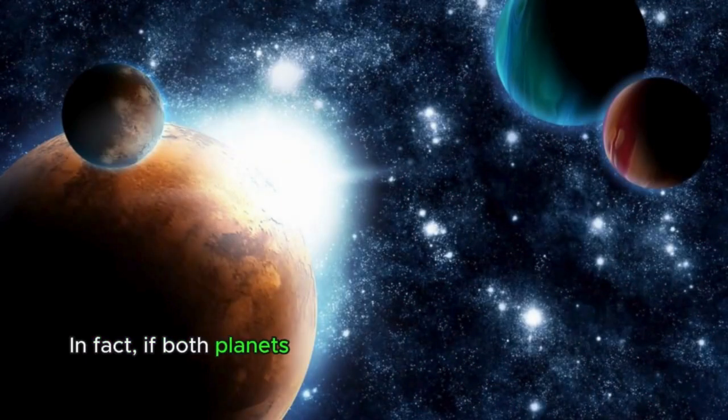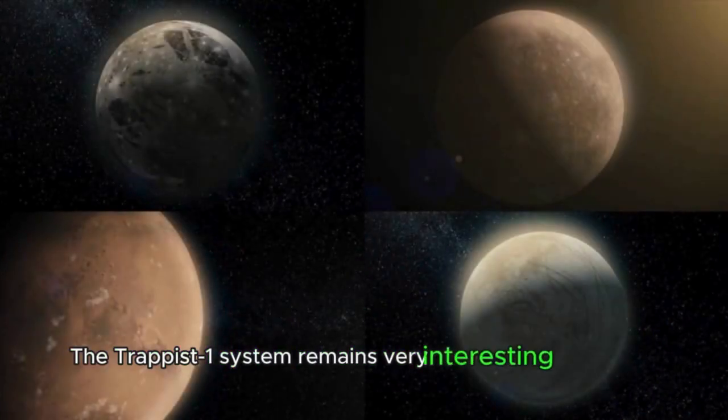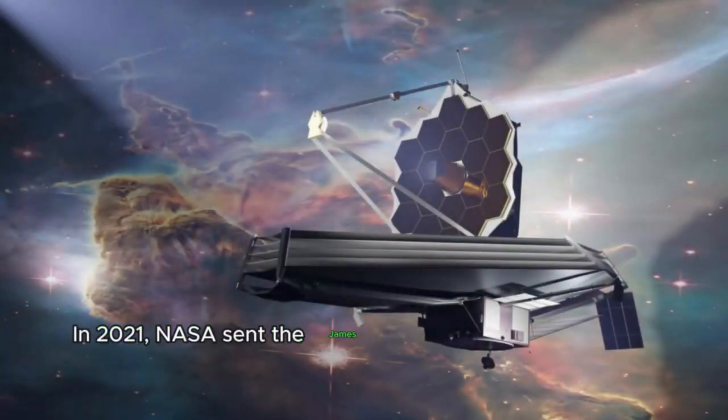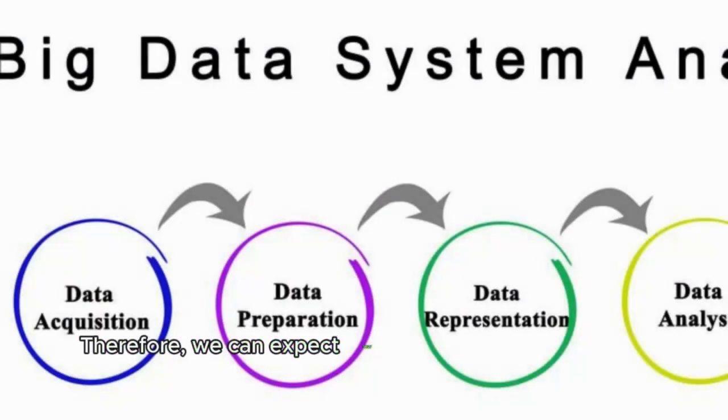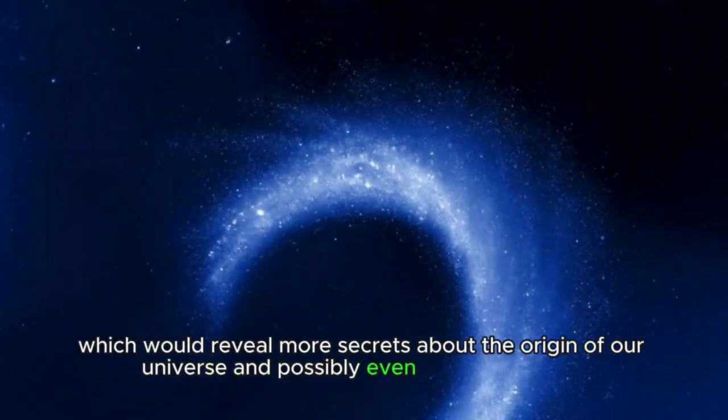In fact, if both planets were covered in ice, they might still be habitable. The TRAPPIST-1 system remains very interesting to all of us. In 2021, NASA sent the James Webb Telescope to the L2 Lagrange Point with a view to study TRAPPIST-1, among other things. Therefore, we can expect new data on a distant system very soon, which would reveal more secrets about the origin of our universe and possibly even the origin of life.